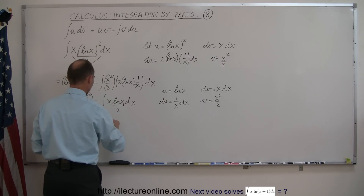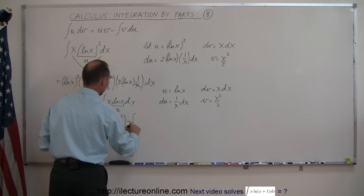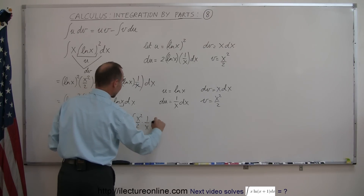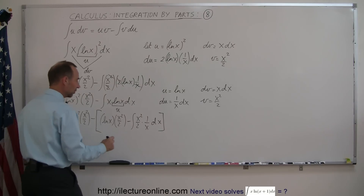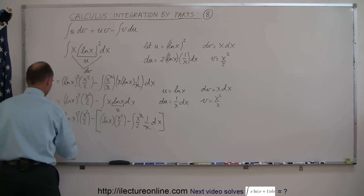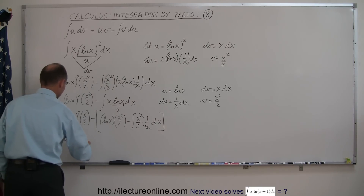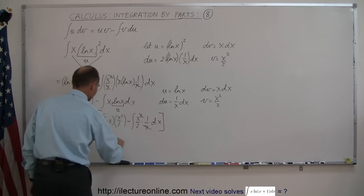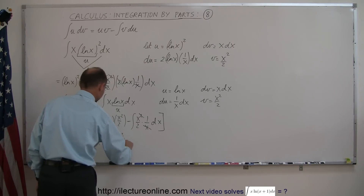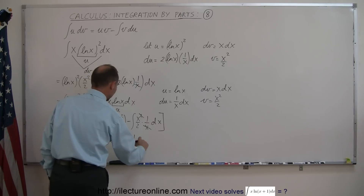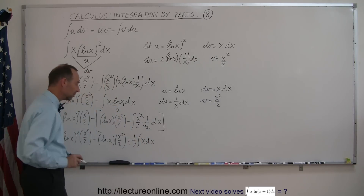So u is the natural log of x, times v which is x squared over 2, minus the integral of v which is x squared over 2, times du which is 1 over x times dx. Notice that this x cancels that x, the 1 half can come outside the integral sign, and so we end up with this equal to the natural log of x quantity squared times x squared over 2, minus the natural log of x times x squared over 2, and then the minus times the minus becomes plus, the 1 half comes outside the integral sign, and we're left with an x times dx, which is easy to integrate.